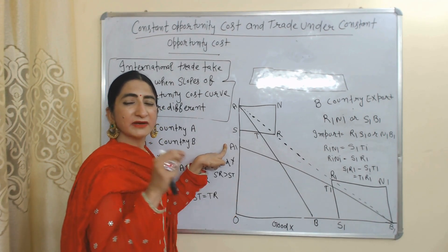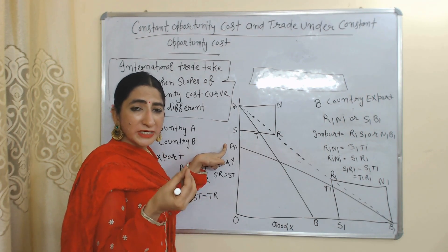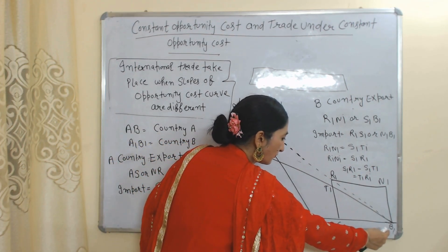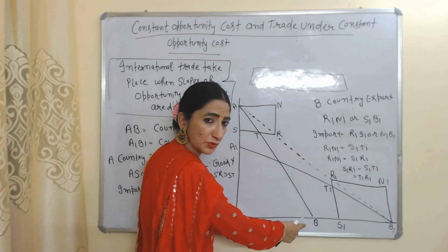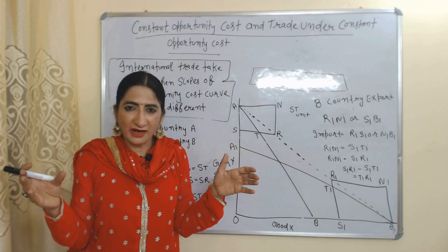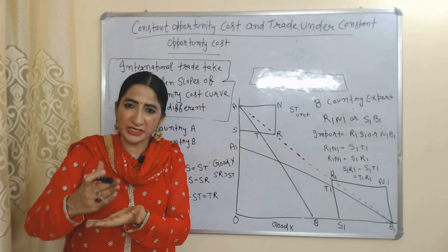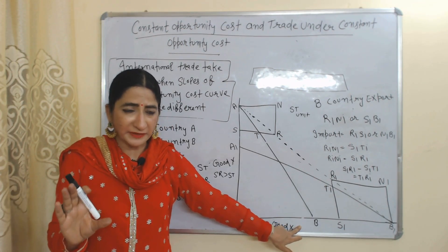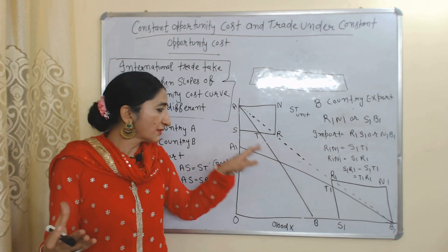That means A can produce more quantities of Y compared to B, so country A has a comparative advantage in production of Y. If international trade occurs, A will specialize in production of Y. On the other hand, B can produce OB1 quantities of X but A can only produce OB1 quantities of X — B can produce more quantities of X than A, so B will specialize in production of X. Country A will increase production and export of Y and reduce production of X and import X from country B.